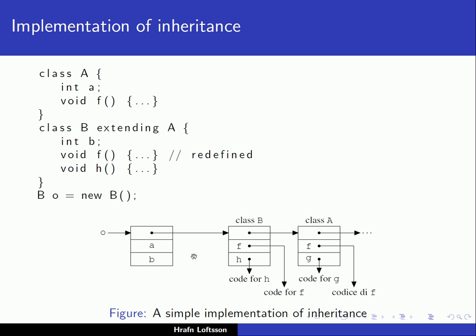We search in the corresponding class to which the object belongs. If the method does not exist there, we search in the superclass. If the method does not exist there, we search in the superclass of the superclass, and so on. So there's a linear scan of the class hierarchy that takes place at runtime.